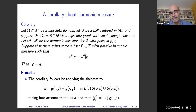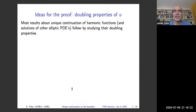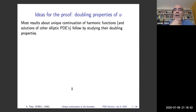Now let me give the main ideas of the proof of the theorem. A general remark: most results about unique continuation of harmonic functions, and also of solutions of other PDEs, usually follow by studying their doubling properties. In our case, to study the doubling property of U, it is useful to consider the function H(X, R), defined as the integral of U squared over the sphere centered at X with radius R, with respect to surface measure of that sphere.